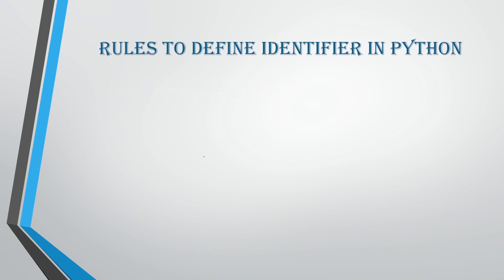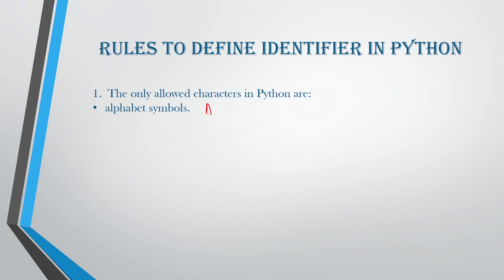There are certain rules to define identifiers in Python. The first rule is the only allowed characters in Python are: alphabet symbols — that is, alphabets either from capital A to capital Z, or from small a to small z.